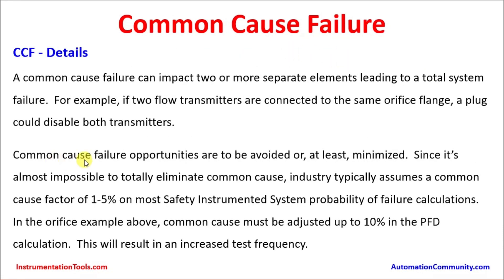Common cause failure opportunities are to be avoided or at least minimized. Since it is almost impossible to totally eliminate common cause, industry typically assumes a common cause factor of 1 to 5 percent on most safety instrumented system probability of failure calculations. In the orifice example above, common cause must be adjusted up to 10 percent in the probability of failure on demand calculations. This will result in an increased test frequency.